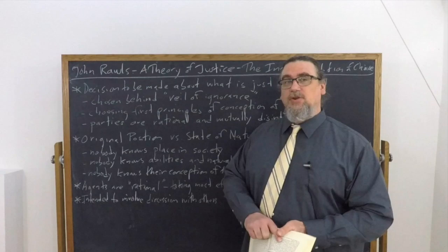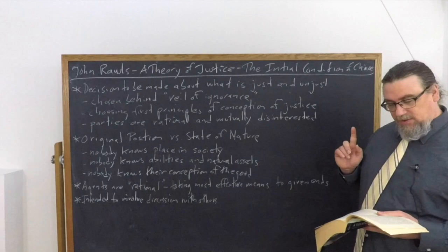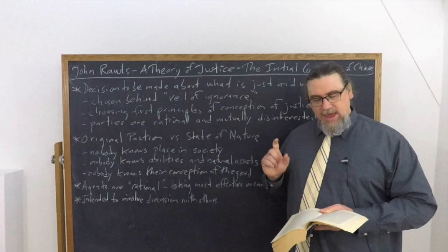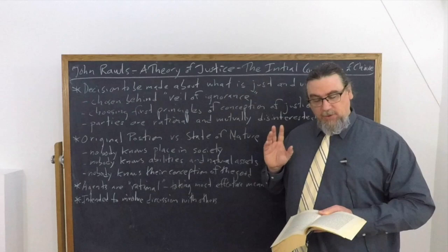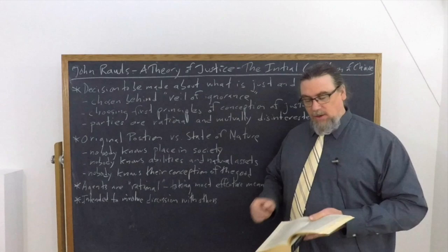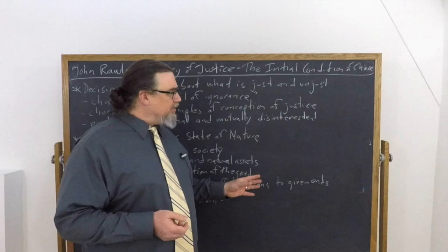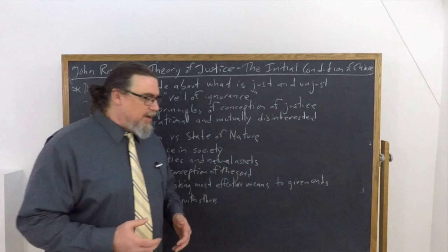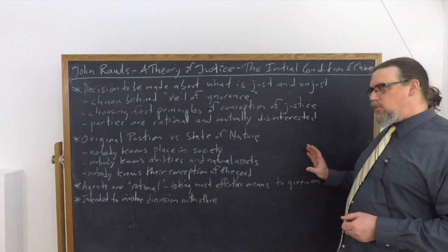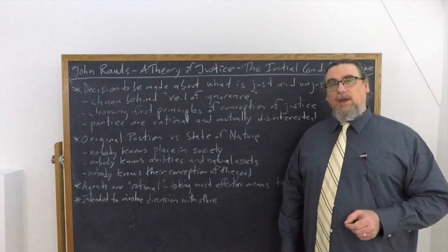What does it mean to be rational here? He says that rationality must be interpreted as far as possible in the narrow sense, standard in economic theory, of taking the most effective means to given ends. He'll modify this concept later, but we have to try to avoid introducing into it any controversial ethical elements. We want to think of people as having certain given ends that we all share in common — maybe things like not being sick and being able to exercise a degree of agency. But we can't build in any robust, substantive conceptions of rationality beyond this, because if we do, we're no longer within the original position and we're kind of playing favorites.